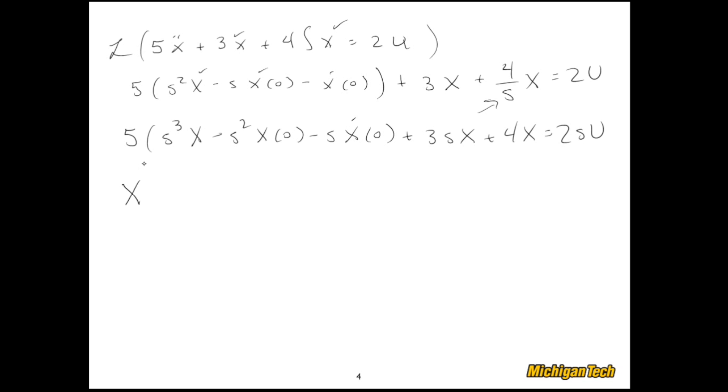Like in the other example, I could solve for capital X, and I'll have 5s cubed from here, plus 3s, plus 4. And my initial conditions are, if I bring those to the other side, I'll have 2sU from here, plus 5s squared x zero, plus 5s x dot zero. And I could again solve for capital X, and I'll have all this stuff in the numerator, and I'll have a little bit of stuff in the denominator, like so.